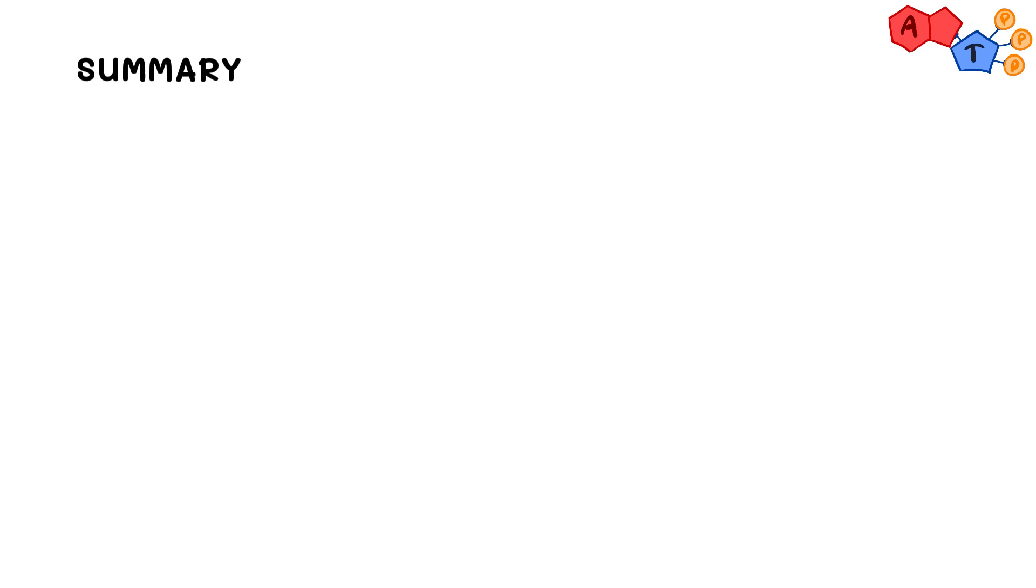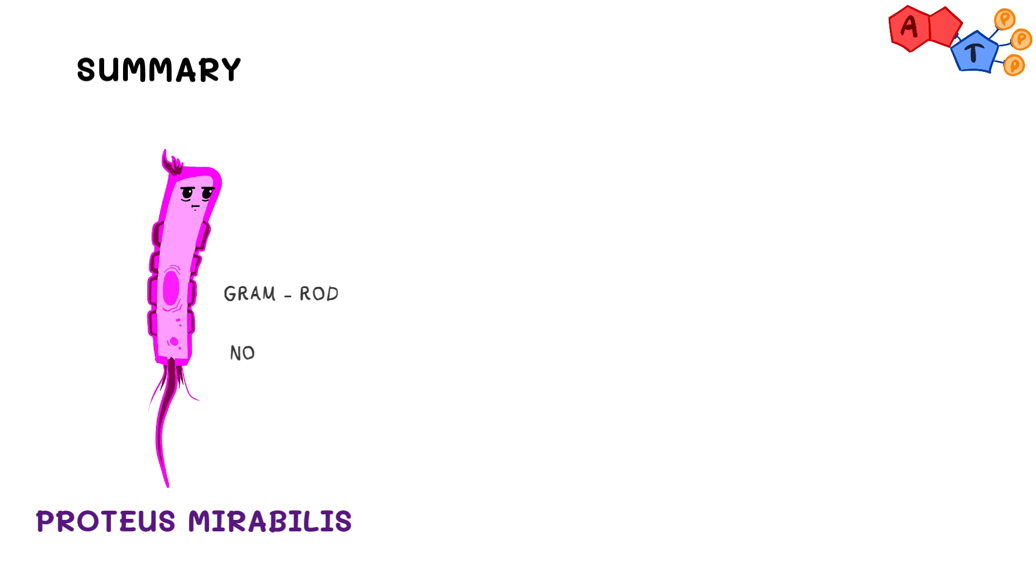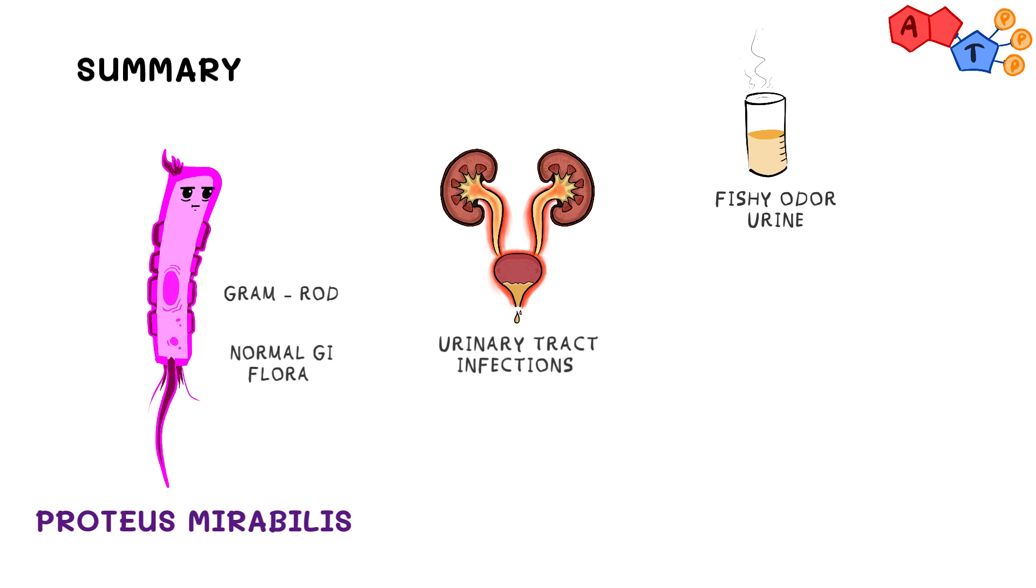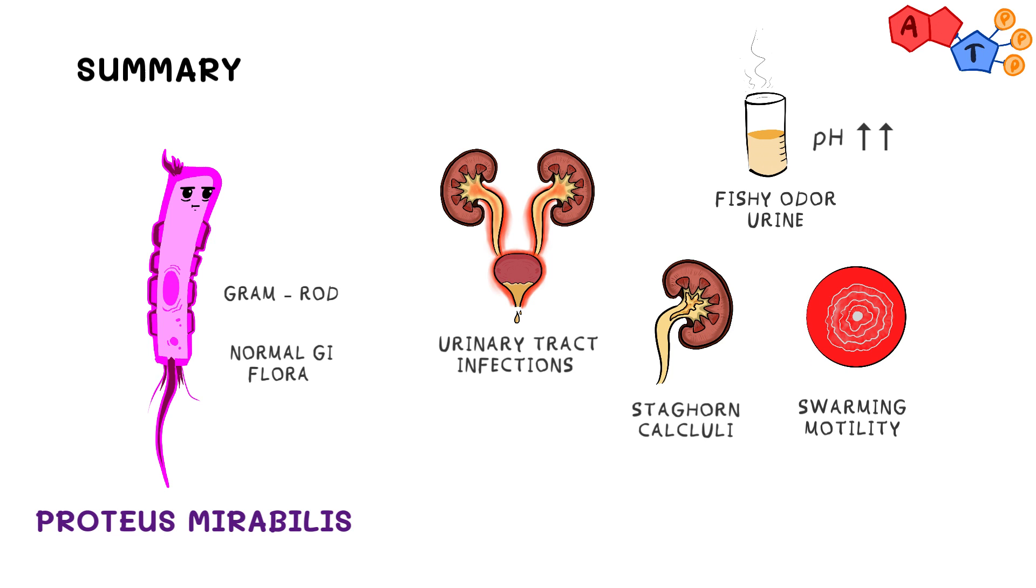Alright, to wrap it up, today we have talked about Proteus mirabilis. We have said that it's a gram-negative rod that's part of the normal human GI flora. It primarily causes UTIs and it's characterized by its ability to produce a distinct fishy odor in the urine, and its ability to produce an alkaline urine that promotes the formation of struvite stones that can manifest as staghorn calculi. It can be identified on blood agar by its unique swarming motility, and finally, it can be treated with ampicillin, trimethoprim-sulfamethoxazole, and cephalosporins. And that's it for Proteus mirabilis, we hope you found it beneficial.